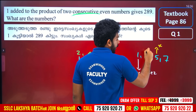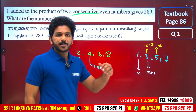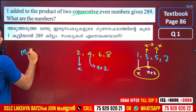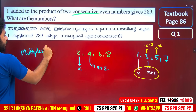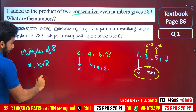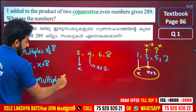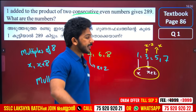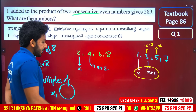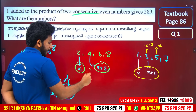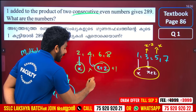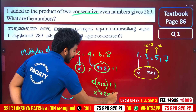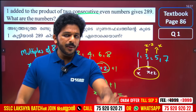I have x, and the next consecutive even number is x plus 2. We will ask this question: 1 added to the product of the quantity — then we will multiply this number. So x times (x plus 2) plus 1 gives x squared plus 2x plus 1. Now we will solve this quadratic equation using completing the square.